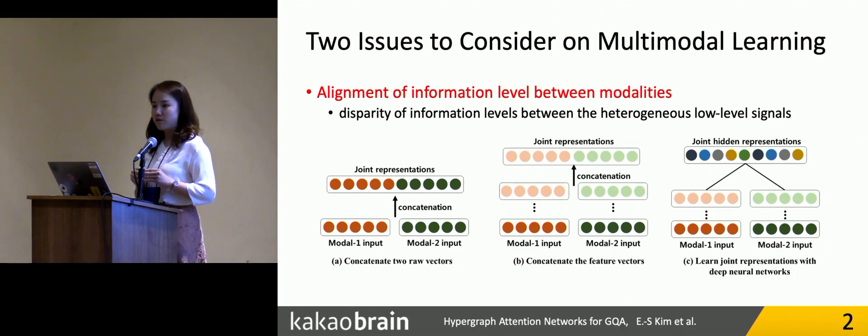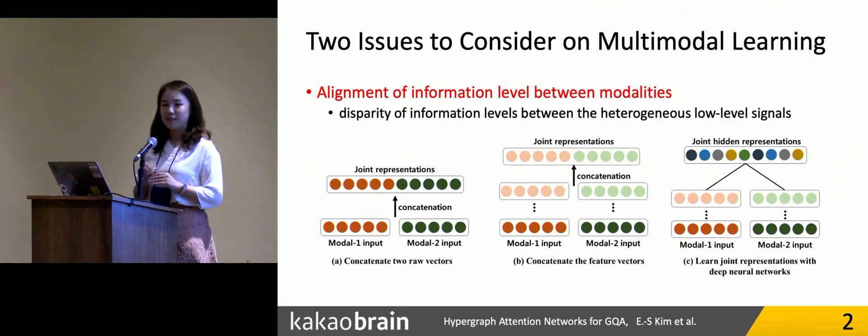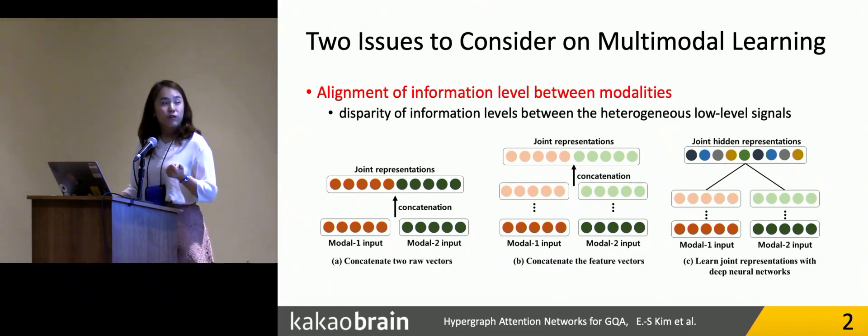But here, we focus on the disparity of information level between those two feature vectors, and we argue that those two feature vectors should be aligned on the same information level before combining them into the joint representation. That is the first problem we want to consider.